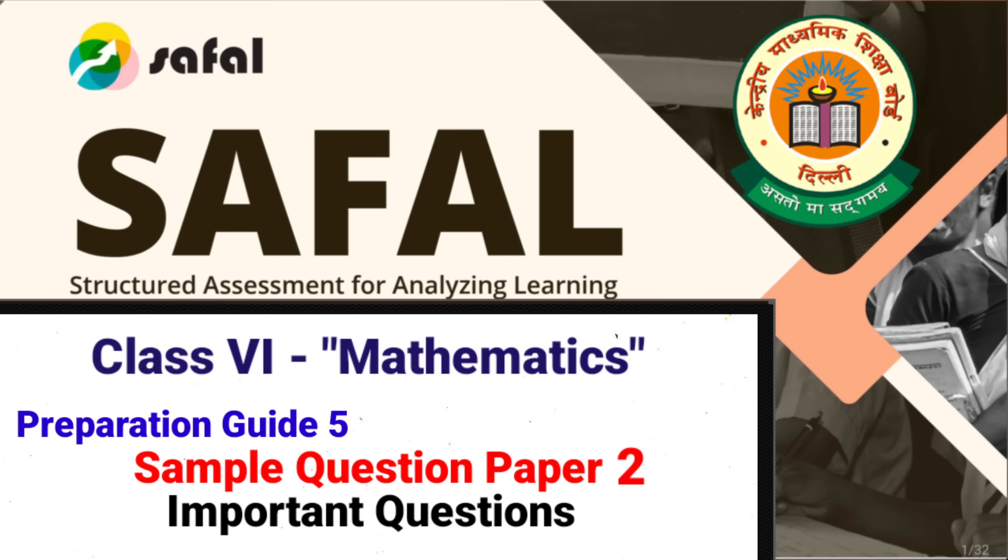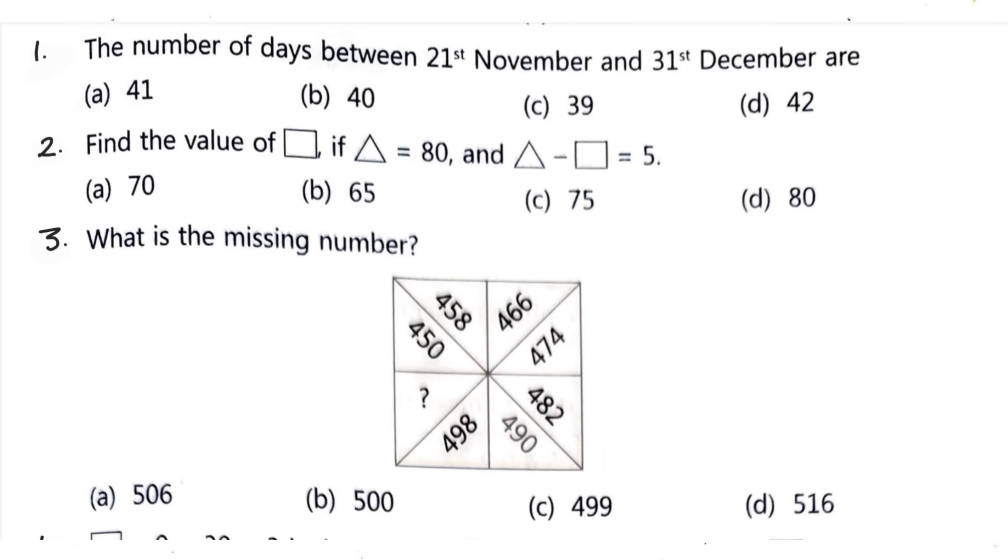First question: number of days between 21st November and 31st December are. Out of 4 options, the correct option is option A, 41. Then second question: find the value of rectangle if triangle equals 80 and triangle minus rectangle equals 5. Your correct option is option C, 75. Next question: what is the missing number? The correct option will come as option A, which is 506.